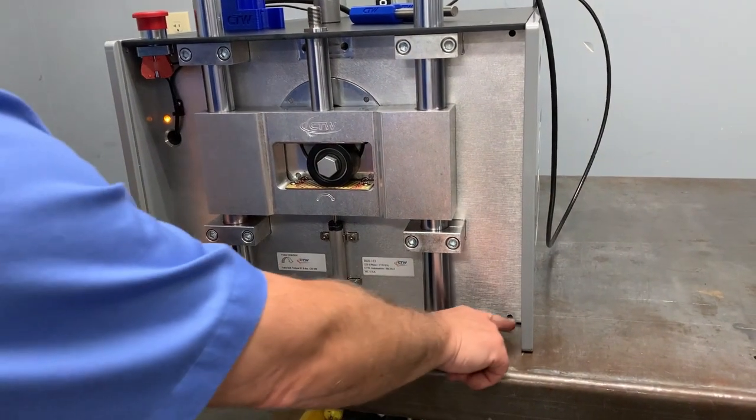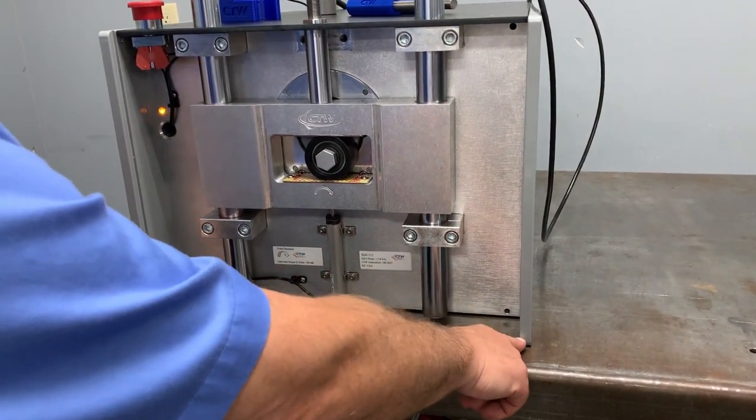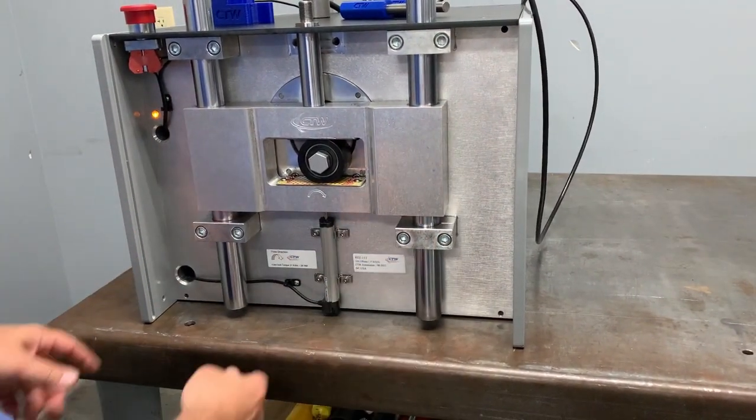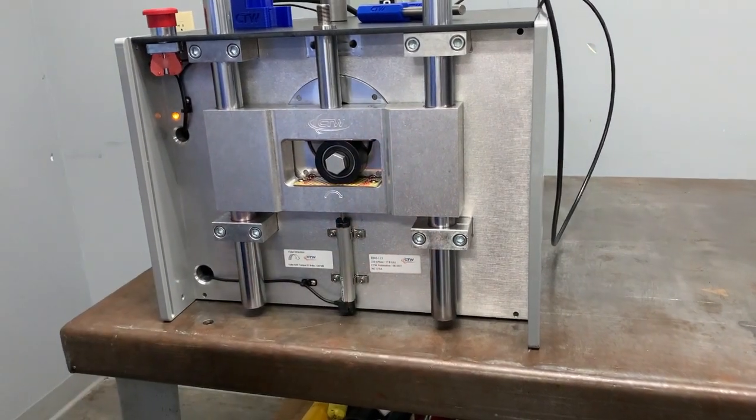That's why we took our side plates and extended them out, so that if you rock the machine forward, it actually protects the displacement sensor.